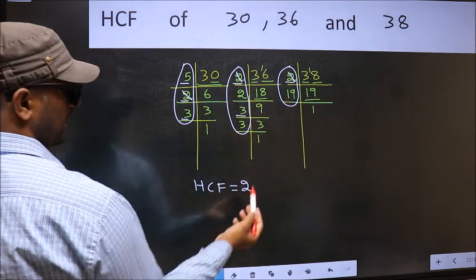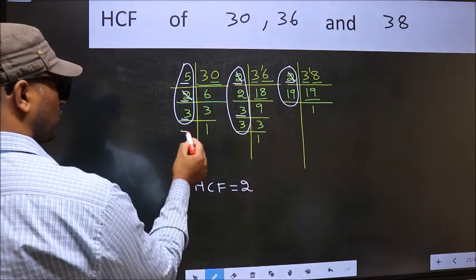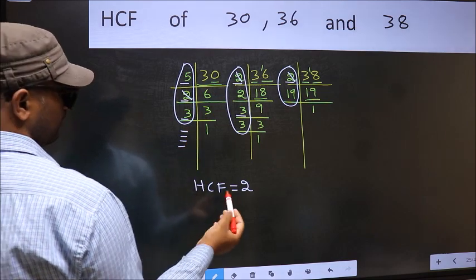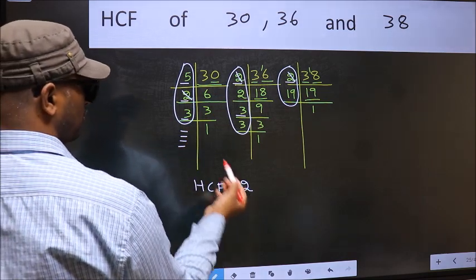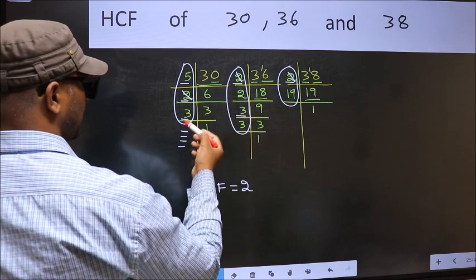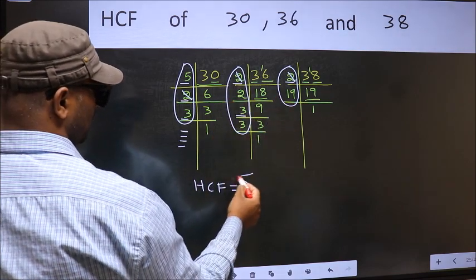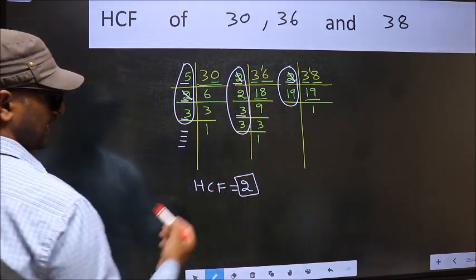So we cannot write here. No more numbers have been left out. So we got only one number 2 present in all the 3 places. So 2 itself is our HCF.